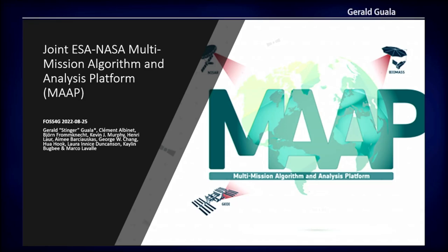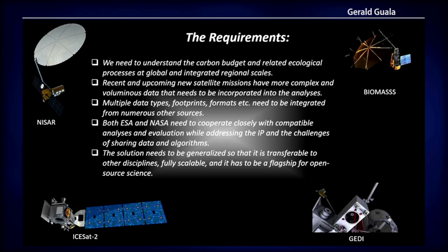Hi, I'm Stinger Guala from NASA. I'll just take a couple minutes to introduce you to the Multi-Mission Algorithm and Analysis Platform, or MAP as we call it. It's really a flagship project to show international collaboration and also for open science. The whole thing is open source, and this is a substantial undertaking — there are about 20 people working on this. It's a fully collaborative thing between the European Space Agency and NASA.